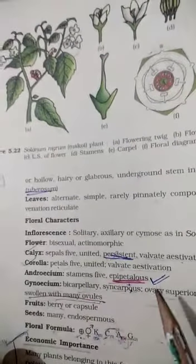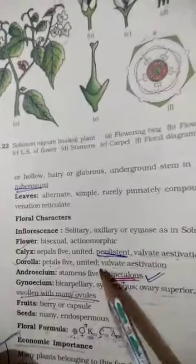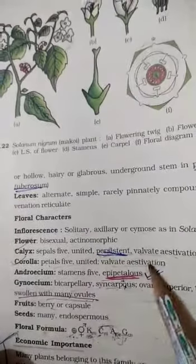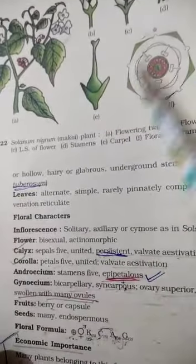Petunia flower is an example. They have valvate aestivation, meaning they are not overlapping each other.